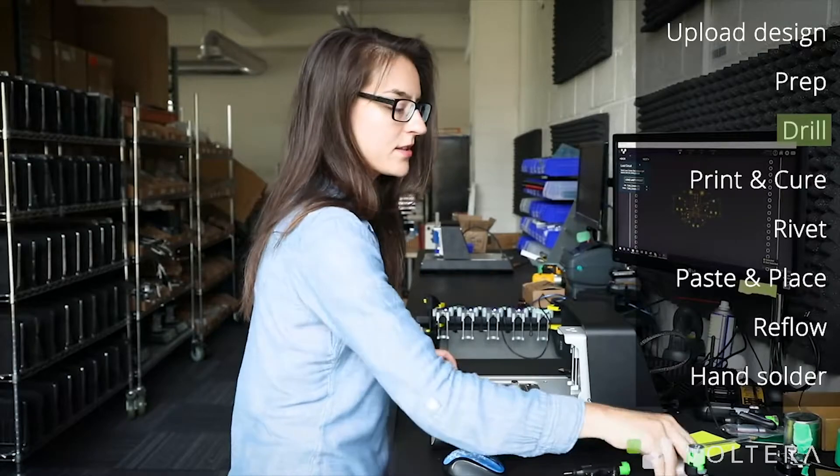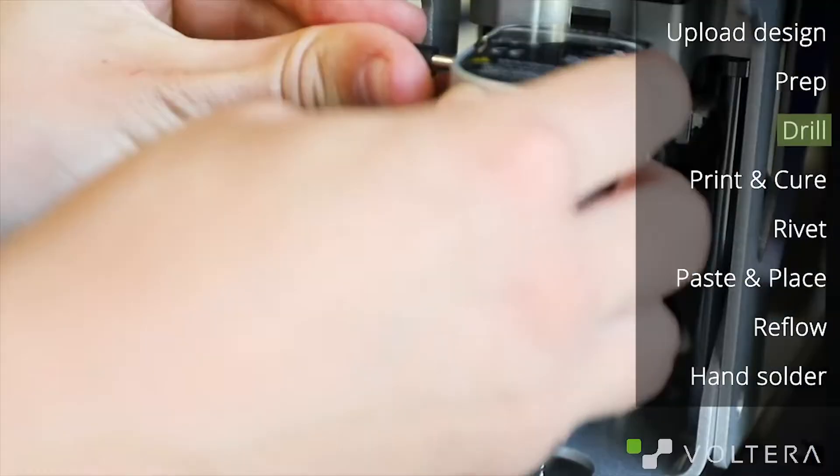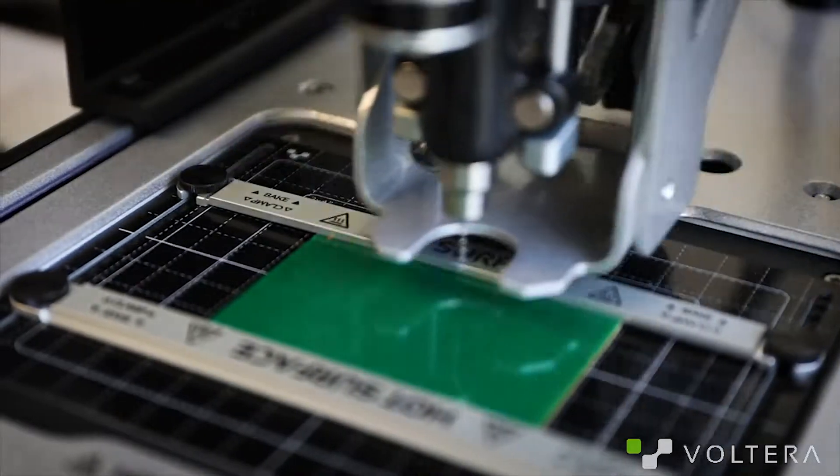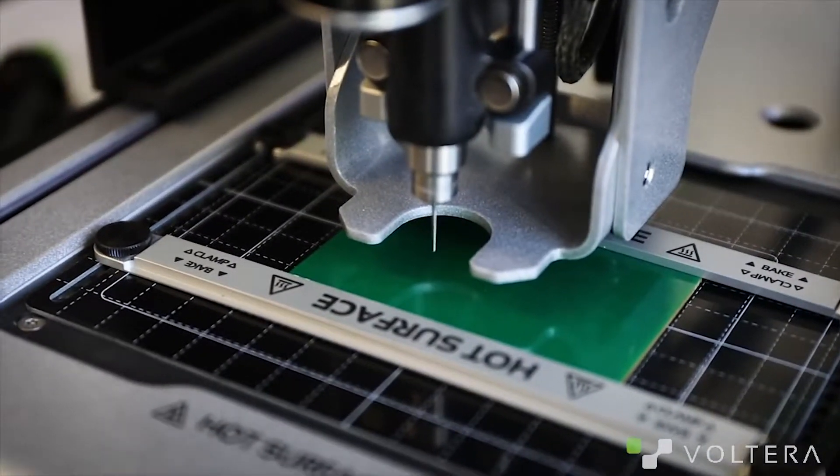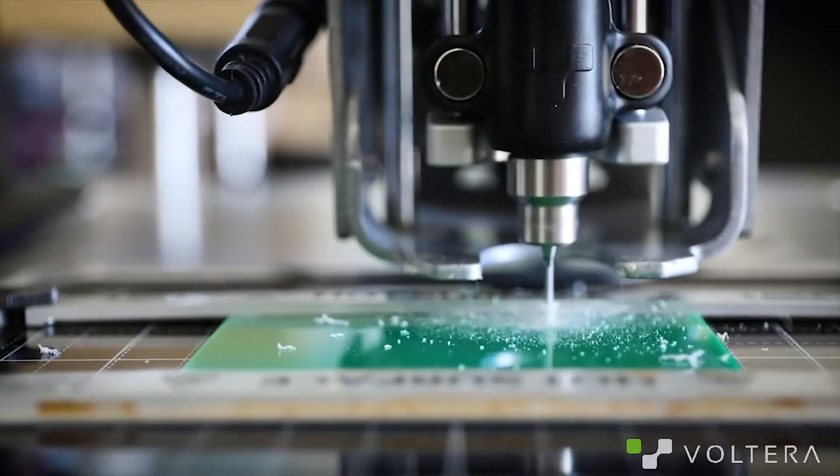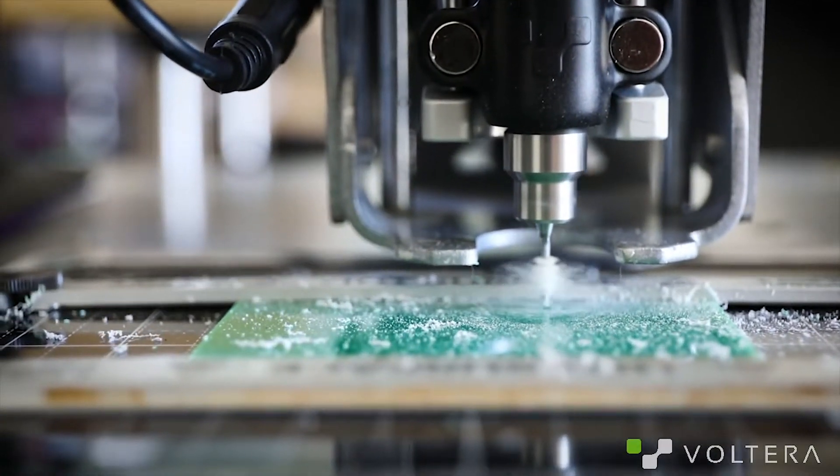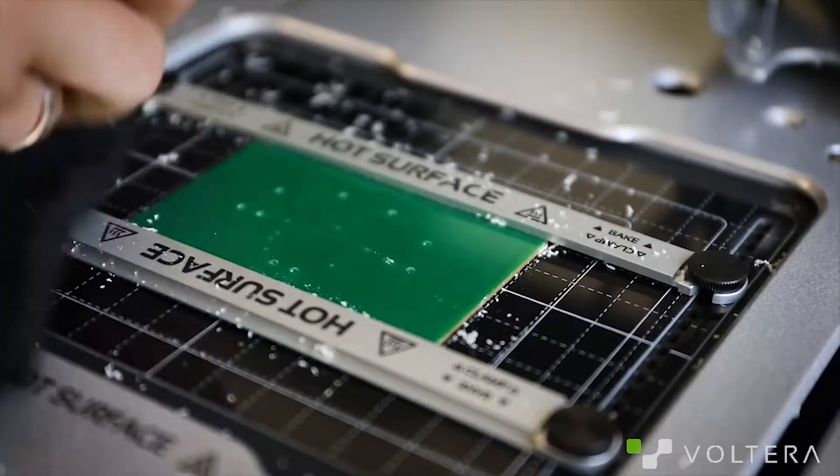Once that's done, go ahead, snap in the drill head and fire it up. Now the board has been mapped in XYZ space, so the drill knows exactly where to go. If you're going to be using different hole sizes, the software will prompt you to change the drill bit after the current hole size.